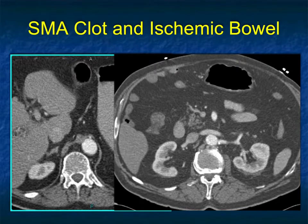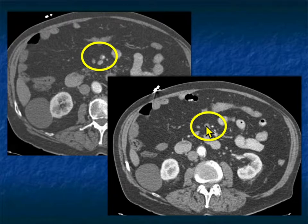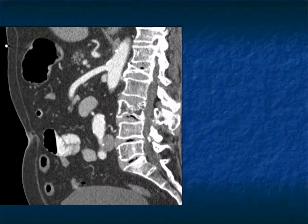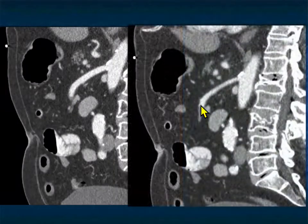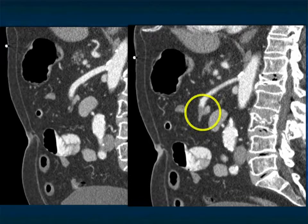Here's another example where the abdomen looks pretty good, the SMA looks pretty good, but when you follow it down, you could easily miss it — there's occlusion of the SMA but no inflammation nearby and no thickening of bowel. If you have the sagittal view, there's the SMA, there's the thrombus, very nicely shown. You have to look at the full length of the vessel or you're going to miss the occlusion.